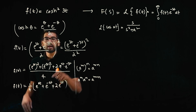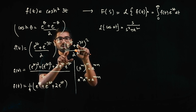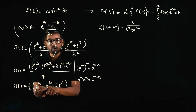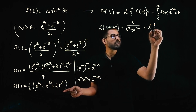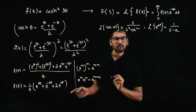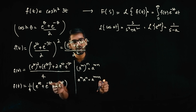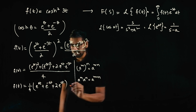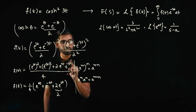We have converted f(t) using the cosh formula, laws of exponents, and the (a+b)² algebraic formula into a sum of exponential functions. Note that 2·e^(0t) = 2, because e^0 = 1 and anything to the power 0 is 1. This is why we express it this way — we know the Laplace transform of e^(at), which is 1/(s−a).